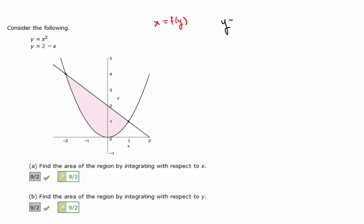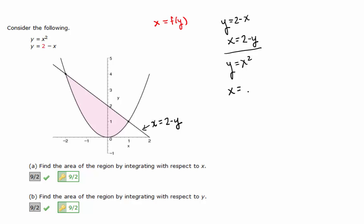If we start with y equals 2 minus x and rearrange it to get x equals something, what do we have? x equals 2 minus y. Good — that is this line here. Now looking at y equals x squared, the parabola: if we solve for x, what do we get? Plus or minus the square root of y. That's right.